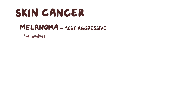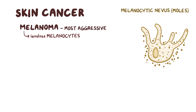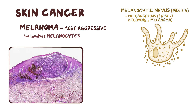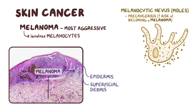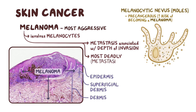The most aggressive form of skin cancer is melanoma, which involves melanocytes. A melanocytic nevus, more commonly known as a mole, results from a type of melanocyte that overproduces melanin. These moles can be considered precancerous because they carry an increased risk of becoming a melanoma. Melanomas grow horizontally within the epidermis and superficial dermis, and also grow vertically, invading the dermis. Metastasis is most associated with the depth of invasion, and melanoma is the most deadly form of skin cancer because of its tendency to metastasize quickly.